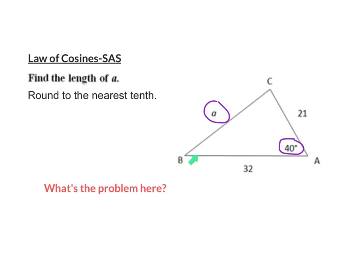I have this side, but I still don't know angle B. I have this side, but I don't know angle C. So when we're in a situation like this, and if you notice on the first line, I titled this 'Law of Cosines SAS.' Anybody know what SAS stands for? Side angle side. So I'm given a side, the angle in between, and I'm given another side.